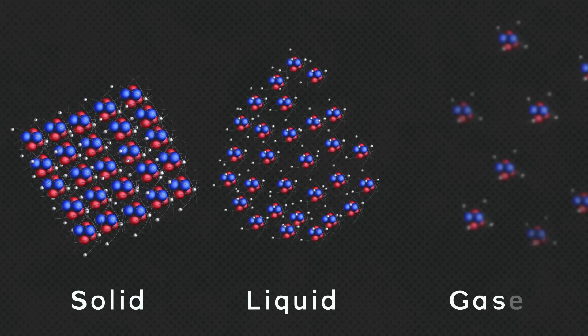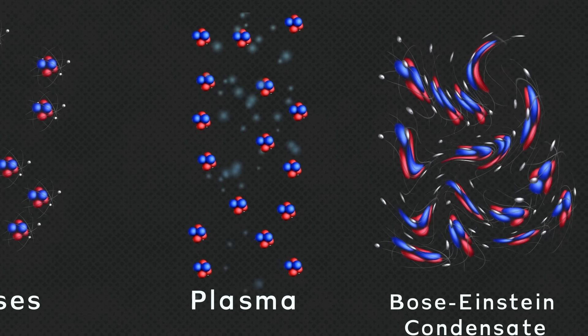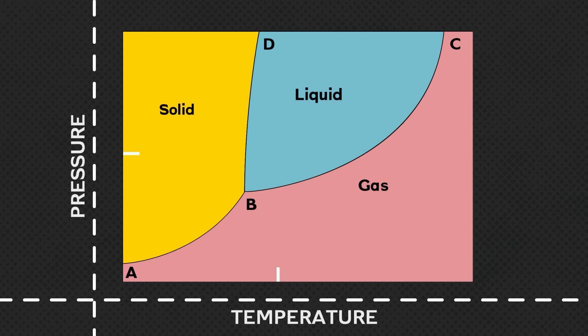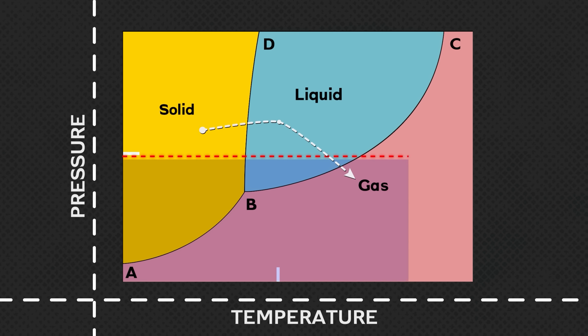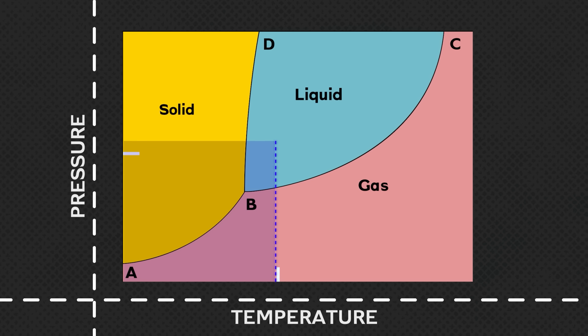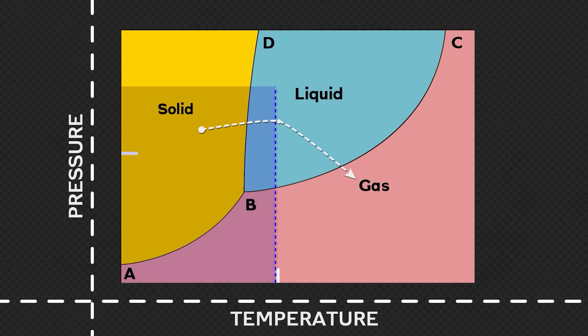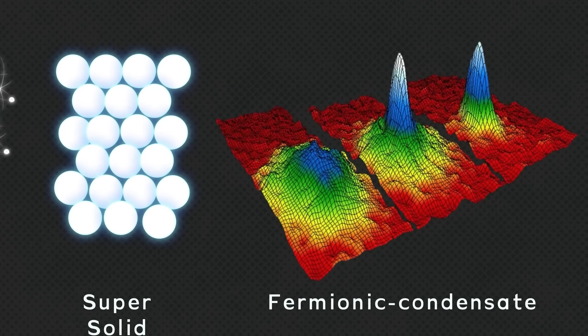So now you know the fourth state of matter. जैसे मैंने बताया, सिर्फ 4 states ही नहीं, बल्कि total 22 states of matter हैं। Scientists ने इन्हें 2 categories में divide किया है: low temperature states और high temperature states। इन states को differentiate करने के लिए एक pressure-temperature diagram use किया जाता है। इस graph के according, अगर मैंने pressure constant रखा और temperature को increase किया, तो solid matter liquid में convert होगा और फिर gaseous state में। लेकिन अगर temperature constant रखकर pressure को increase या decrease किया, तो भी यही result मिलेगा। यानी states of matter temperature और pressure दोनों पर depend करते हैं।